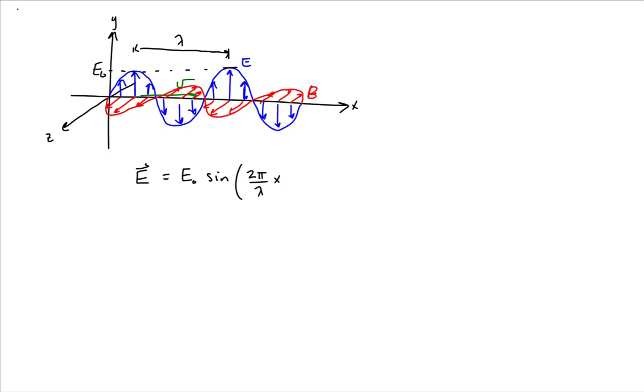And now, since we are moving in the positive x direction, this is going to be minus 2 pi times the frequency of oscillation. Now remember, the frequency of oscillation is equal to 1 over the period. The period is the time it takes to complete one oscillation. So the frequency is the number of oscillations per second. And this is times time.